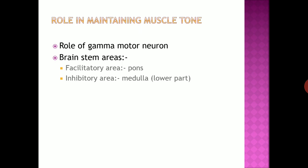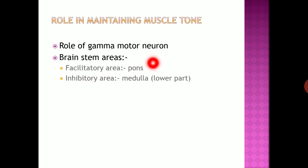Regarding supra-spinal control on muscle tone, the brainstem is a very important area. As already discussed, there are two areas: facilitatory and inhibitory. The facilitatory area is also known as the bulbo-reticular facilitatory area, located in the pontine reticular formation. It discharges facilitatory impulses through spinal motor neurons. This area receives excitatory impulses from vestibular nuclei, the facilitatory portion of cerebral cortex, cerebellum, and basal ganglia.